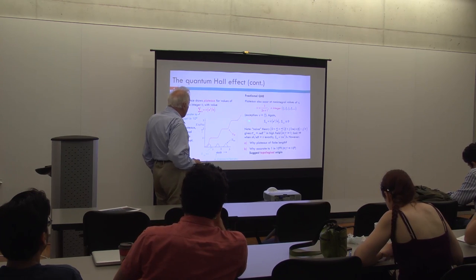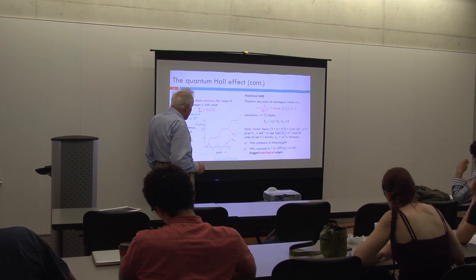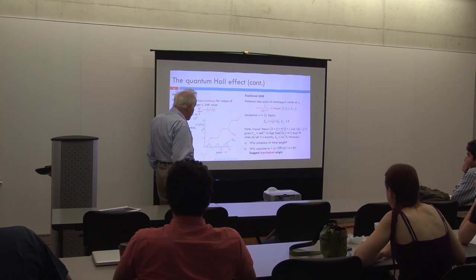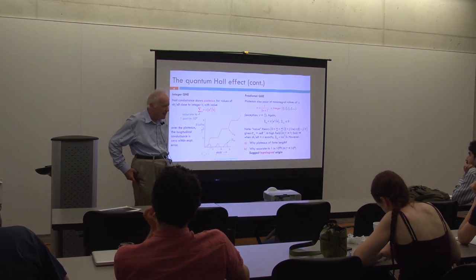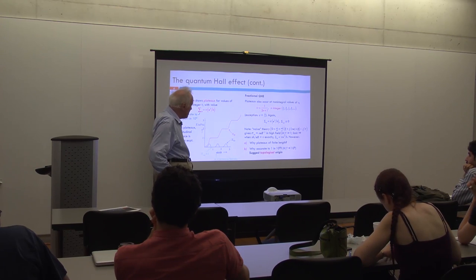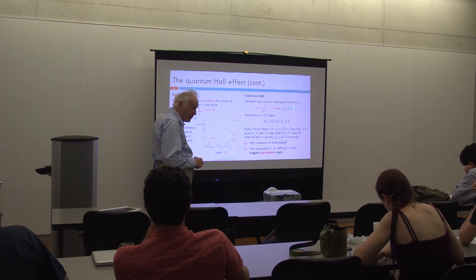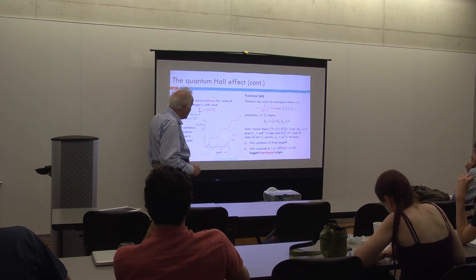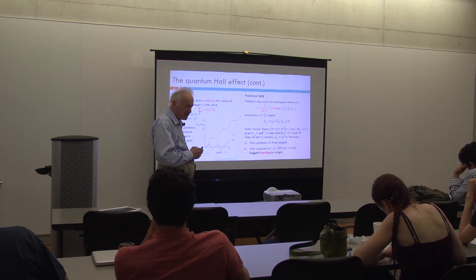In the fractional quantum Hall effect, again we find that the Hall conductance is ν times e²/h even though ν is not now integral, and the longitudinal conductance is again zero within experimental error. More honestly: for the nicer values of ν, for example 1/3 — the original Laughlin state — it is indeed zero within experimental error. For some of the more exotic fractions like 15/11, it tends not to be exactly zero. The reasons are not always well understood, but at least for the clean cases, it's zero.